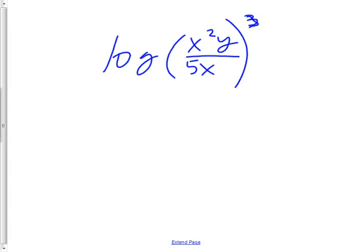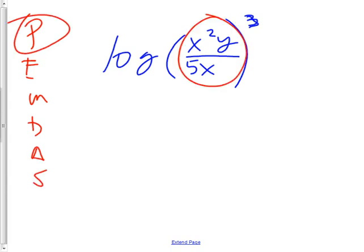but the order of operations would say to do parentheses before exponents, right? Please excuse my dear Aunt Sally. Parentheses come first, so what's in the parentheses that can be reduced? The x. That x² over x is just going to become x, and this one's going to cancel. Like that, and now everything gets cubed. Final answer. Log x³ y³ over 5³.